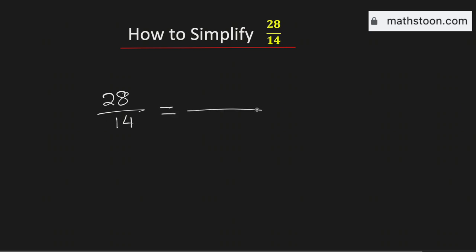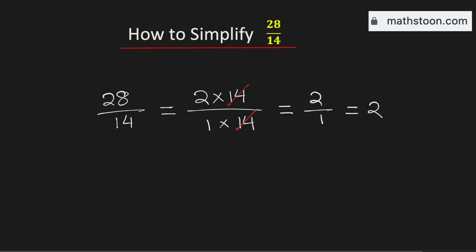We can write 28 as 2 times 14, and we will write 14 as 1 times 14. Now we will cancel the common number, which is 14. So it is just 2 over 1, and this is just 2. So the fraction 28 over 14 is equal to 2, and this is our final answer.